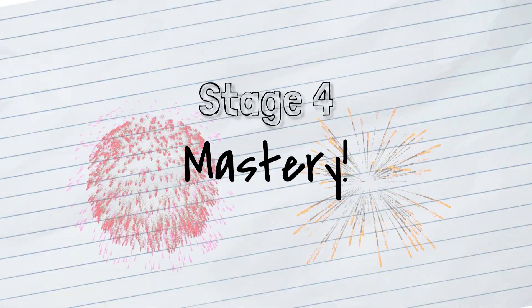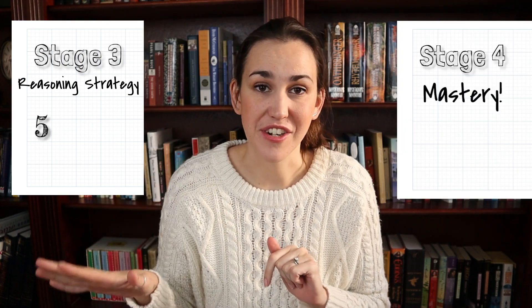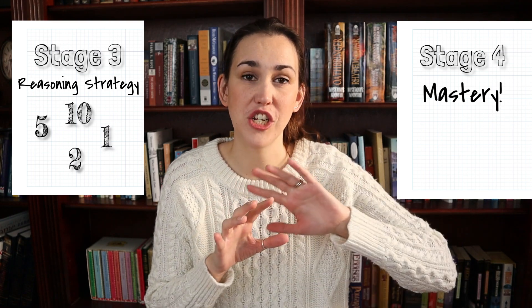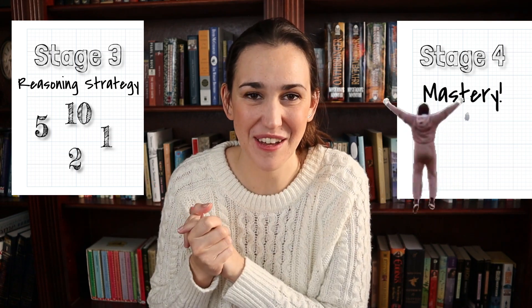Eventually, after practicing skip counting and pulling from math facts they already know, they're going to get to fact mastery where they can pull any multiplication equation and they know it. Let's say your kid is struggling between stages 3 and 4 — they know their 5s, 10s, 2s, and 1s, but they're struggling transitioning to fact mastery where they know all the facts in between.